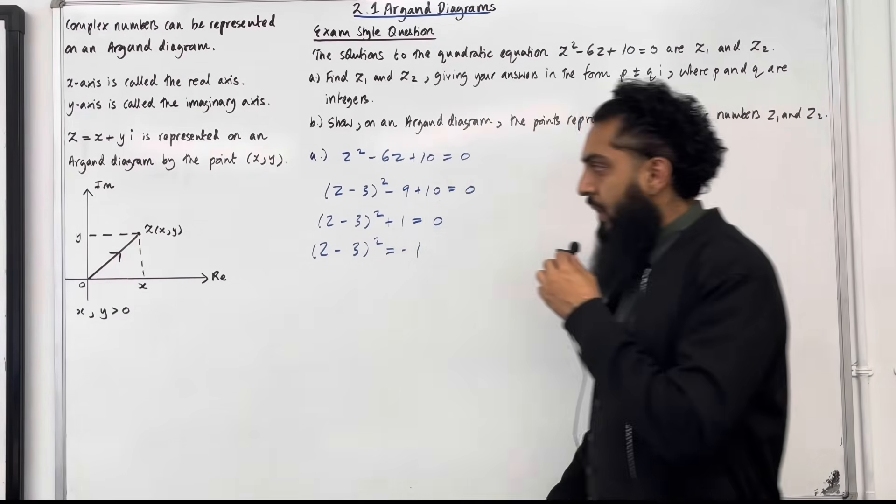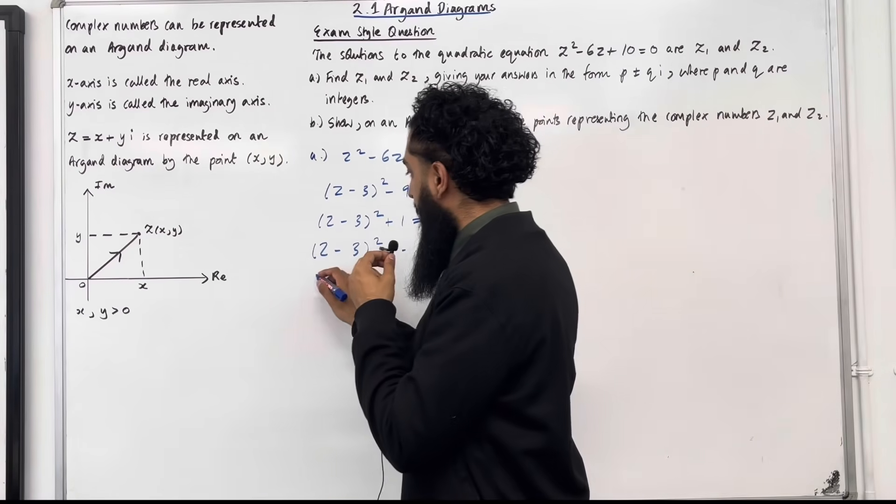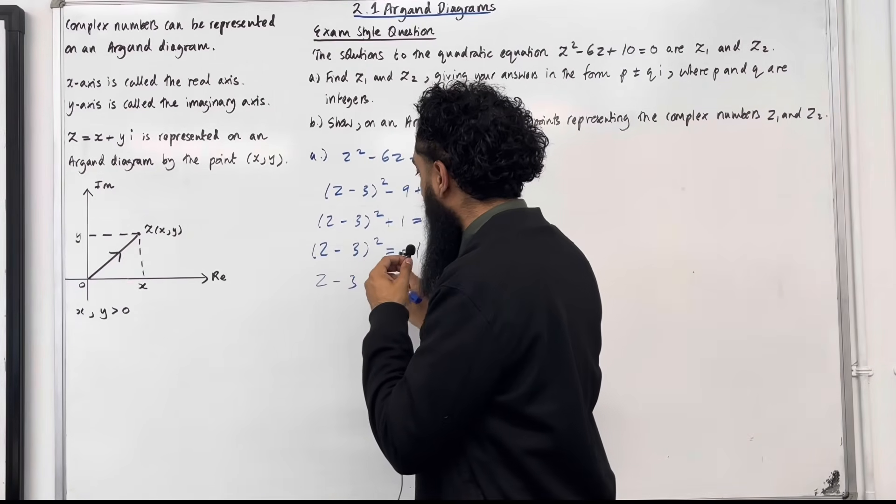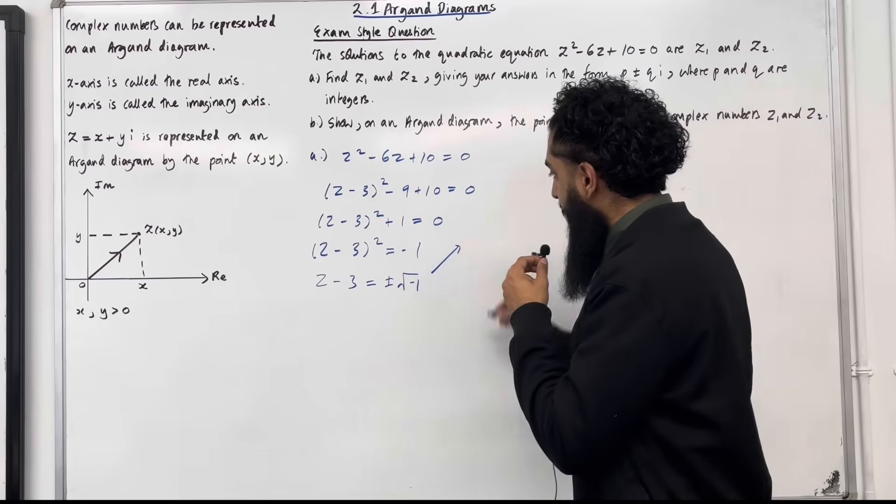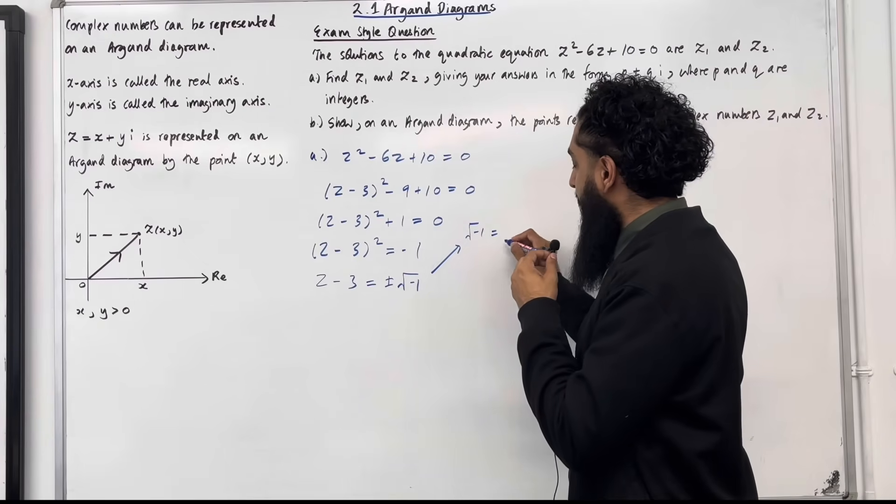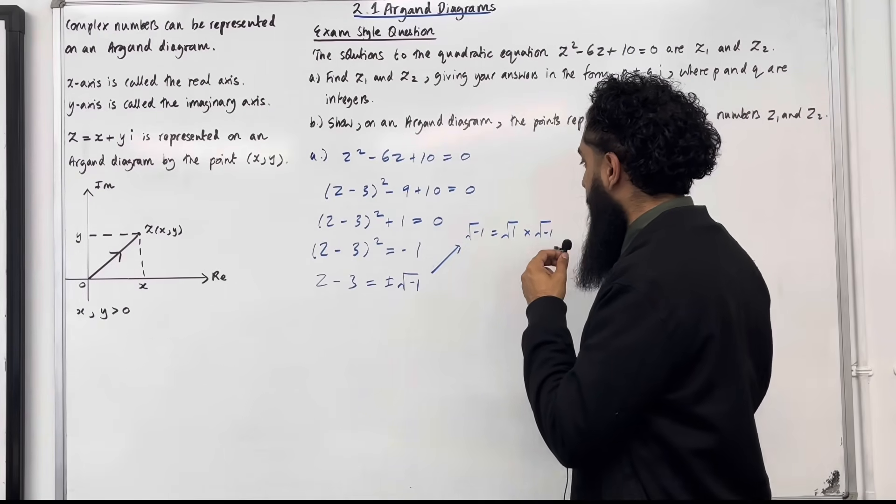Now I can take the 1 to the right hand side so I've got (z - 3)² = -1. The next step is to take the plus or minus square root of negative 1. So I've got z - 3 = ±√(-1). But we know that √(-1) can be split into √1 × √(-1).